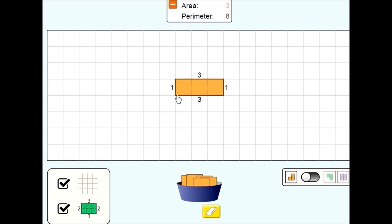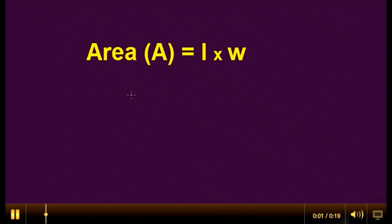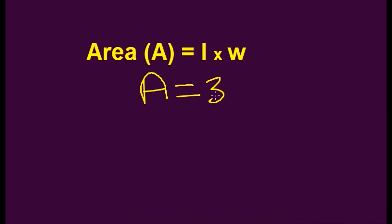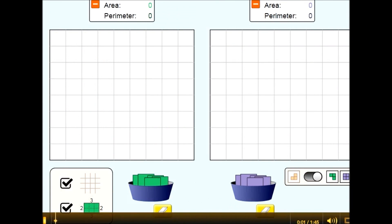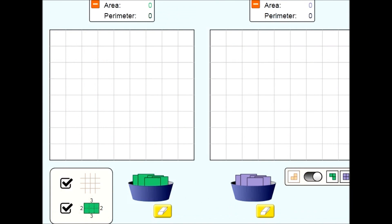Just to quickly recap once again, the area of our rectangle is the length times the width, which is 3 times 1. So the area of our rectangle was 3 centimeters squared, which we write as centimeters to the power of 2.